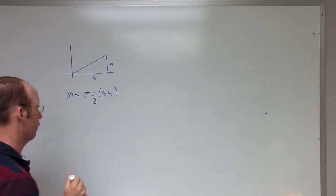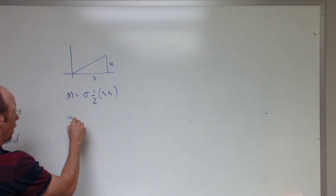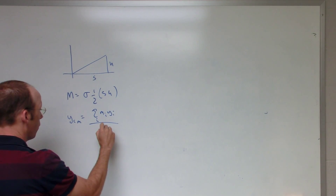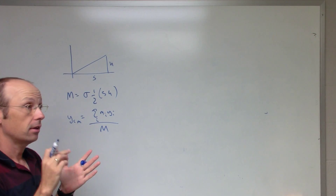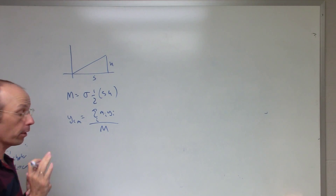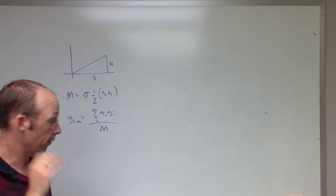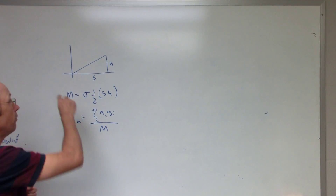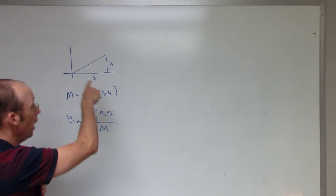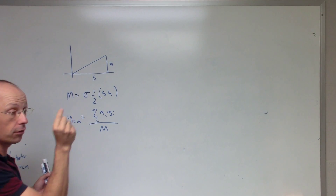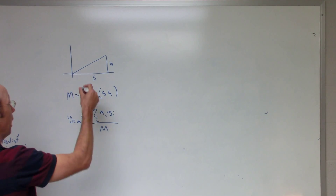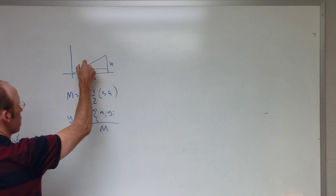Let's find the y-center of mass. The y-center of mass equals the sum over i of m_i × y_i divided by the total mass. If I had individual pieces I would add them up, but I'd rather do something different. Since this is two-dimensional, I'd have to break it into little squares — a whole bunch of little dx by dy's.